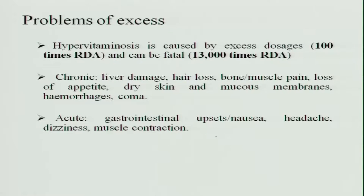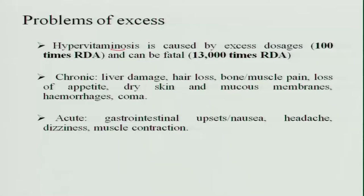While Vitamin A is very good for body functioning, excess consumption leads to problems. Hypervitaminosis is the term given for excess consumption of Vitamin A. When the dosage is 100 times more than the RDA, it can be fatal. Chronic intake of Vitamin A can lead to liver damage, hair loss, bone and muscle pain, loss of appetite, dry skin, mucous membrane problems, hemorrhages, and coma.